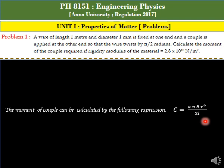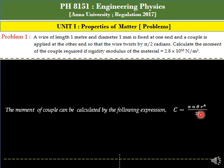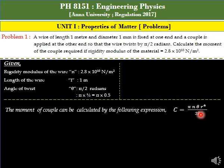We need to identify and pick the correct formula to solve the problem. The given values are: rigidity modulus of the wire, n = 2.8 × 10¹⁰ Newton per meter squared.